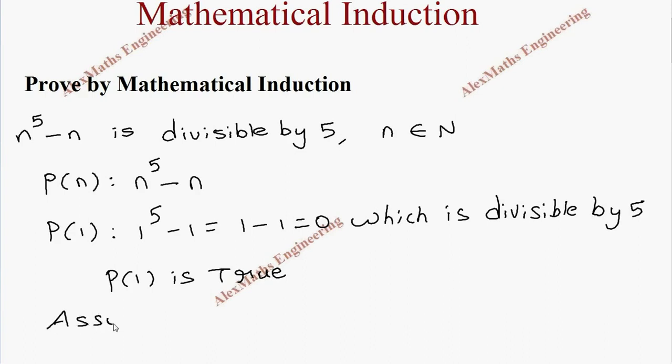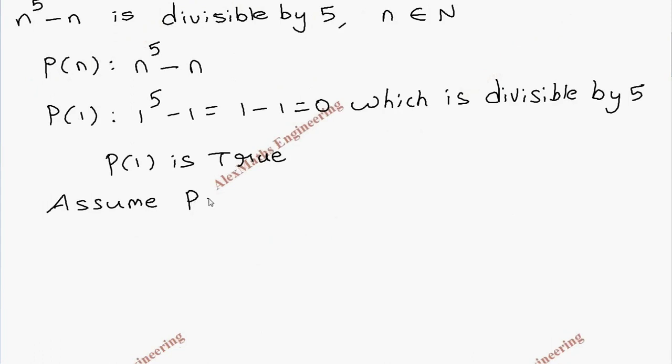Now we have to assume P(k) is true. So P(k) is the expression k^5 minus k. Since it is divisible by 5, we can take this as 5 times some constant. When it is a multiple of 5, then only it will be divisible by 5, so this expression k^5 minus k should be 5d where d is a constant.